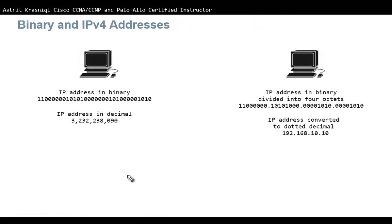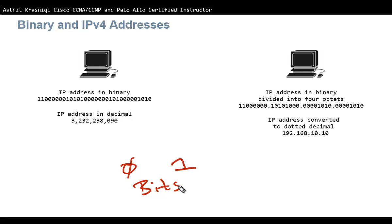Binary number systems consist of zeros and ones only, and these are called bits. Computers, end devices, servers, routers, switches — all the nodes on the network when they communicate, everything you see digitally, is zeros and ones. We need to know how to convert these zeros and ones into hexadecimal and into decimal.